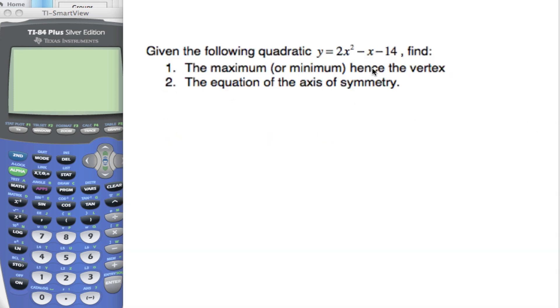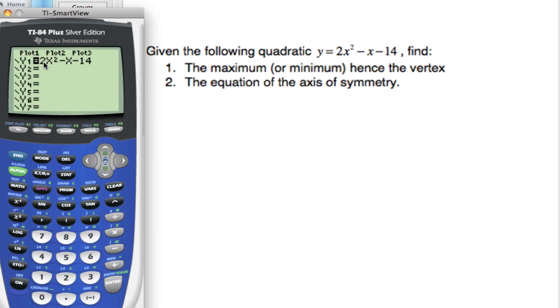So let's get to a problem. We're given the following quadratic. We want to find the maximum or minimum, hence the vertex, and then find the equation of axis of symmetry. Well, if I go to my y equals, I've taken the liberty to already graph it. And if I zoom to 6, which is my standard window, I get my graph here.